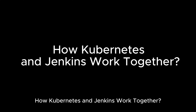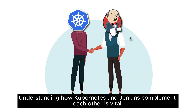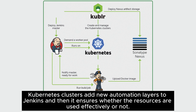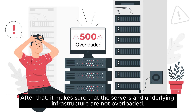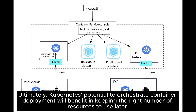How Kubernetes and Jenkins work together: understanding how they complement each other is vital. Kubernetes clusters add new automation layers to Jenkins, ensuring resources are used effectively and that servers and underlying infrastructure are not overloaded. Ultimately, Kubernetes' potential to orchestrate container deployment benefits in keeping the right number of resources available for later use.